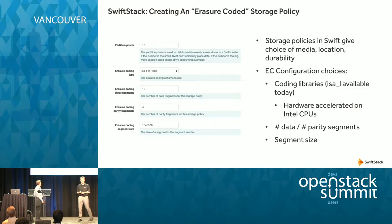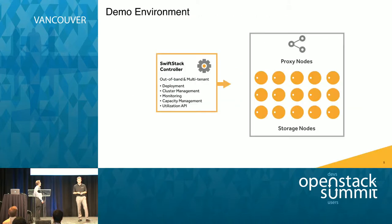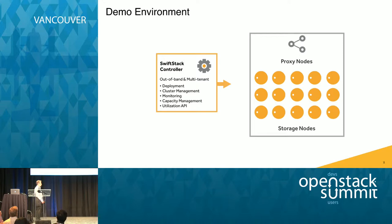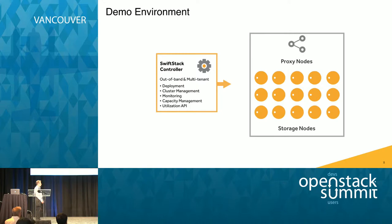So just to give you a quick rundown of what we've got: we have a SwiftStack controller running in a lab environment, and that controller is managing several clusters. The cluster we're going to be showing you has roughly 15 storage nodes with a bunch of disks attached, a couple of storage policies already deployed, and some proxy nodes in front. Proxy nodes, if you're not familiar with Swift, are responsible for routing requests to your backend storage and figuring out where to place and retrieve data.